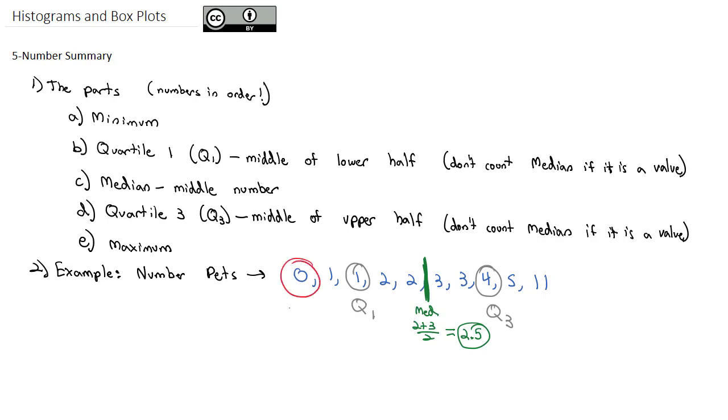And then, finally, I can just pull off the ends that the minimum value and the maximum value are on the ends. And so that tells me that my five number summary is made up of the numbers 0, 1, 2.5, 4, and 11.